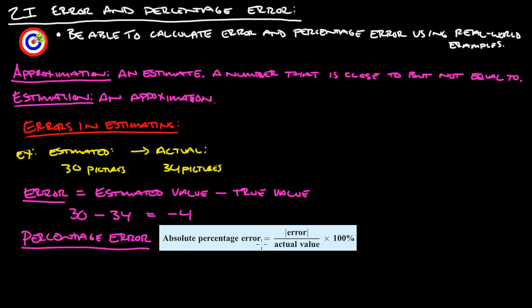To find the absolute percentage error, you take the absolute value of the error, divide by the actual value, and then multiply it by 100. So if we calculate the absolute percentage error of this example, we take the absolute value of negative 4, which is 4, divided by the actual value 34, and then multiply that answer by 100%.